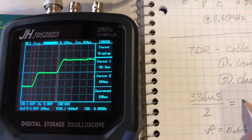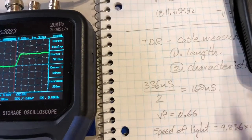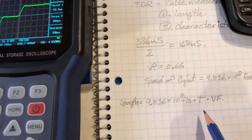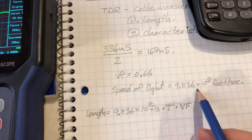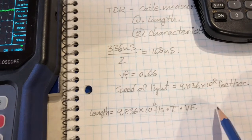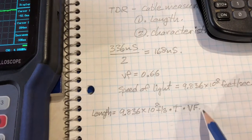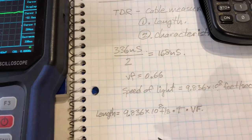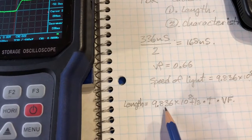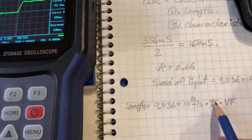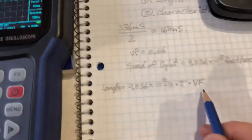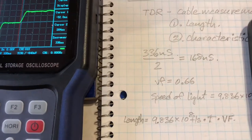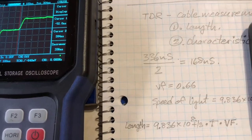To calculate the one-way time for that trip down the coax cable, we take the two-way trip time of 336 nanoseconds divided by two, which gives us 168 nanoseconds. I've written down the velocity factor: 0.66. Speed of light is 9.836 times 10 to the eighth feet per second. So we have 9.836 times 10 to the eighth feet per second times the one-way trip time times the velocity factor of the cable, and that's going to give us our answer.